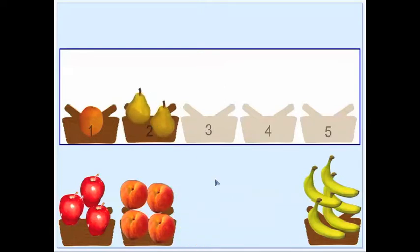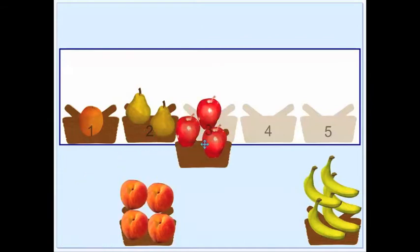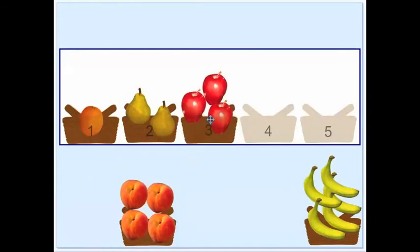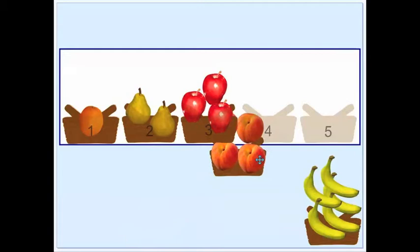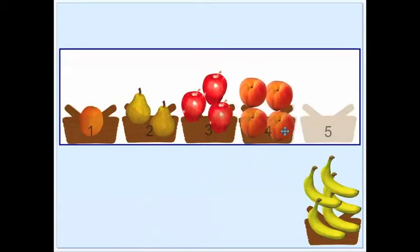Which fruit goes next? The one with three objects. That's right, the apples. The peaches had one, two, three, four objects. So that goes next, which means there were five bananas.